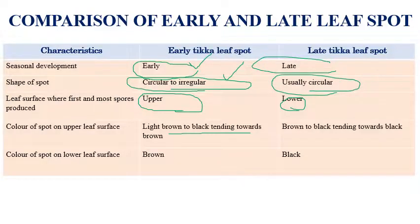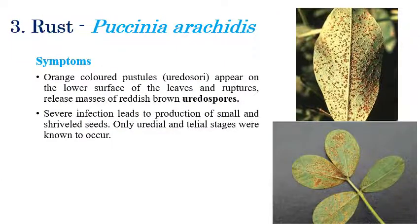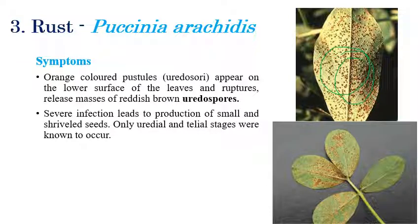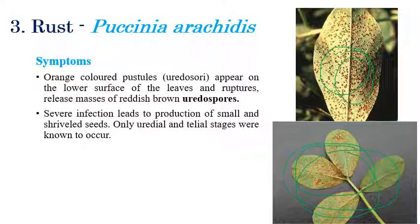Rust is caused by Puccinia arachidis. Symptoms mostly appear on the lower surface of leaves. Orange colored rust pustules, which are uredospores or uredia, can be seen on the lower surface. Under a microscope, millions of uredospores that are reddish brown or orange in color can be observed. In severe infection, shriveling of seeds and leaves can occur. Only the uredinial (telia) stage is known to occur in groundnut rust.